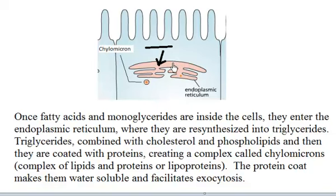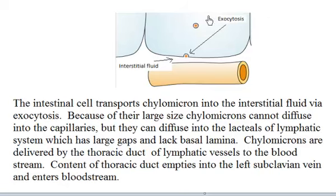The newly synthesized triglyceride is combined with cholesterol and phospholipids, and then coated with protein. This complex of triglycerides, cholesterol, phospholipids, and a protein coat is called a chylomicron. Once formed in the endoplasmic reticulum, the chylomicrons are ready to leave the epithelial cell.